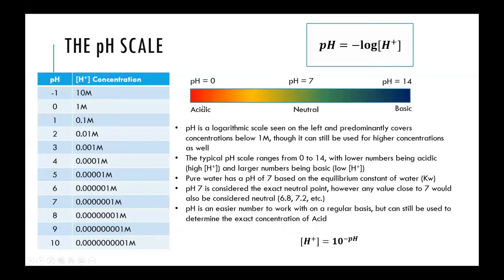To convert between pH and the concentration of H-plus, it is the negative log of the concentration of H-plus, in units of molarity. Because it's a negative log, the higher the concentration, the lower the pH number. So a low pH value is an acidic solution.